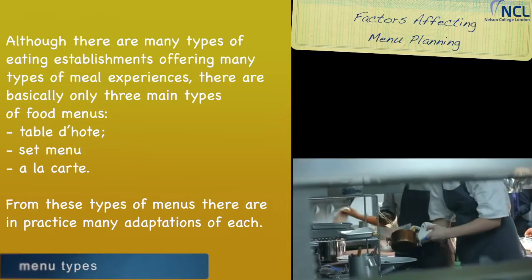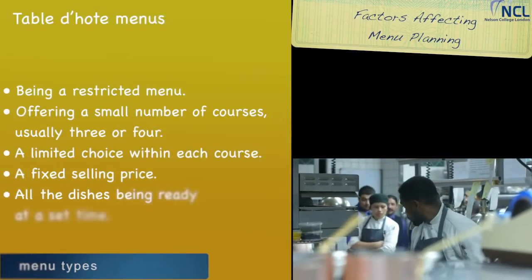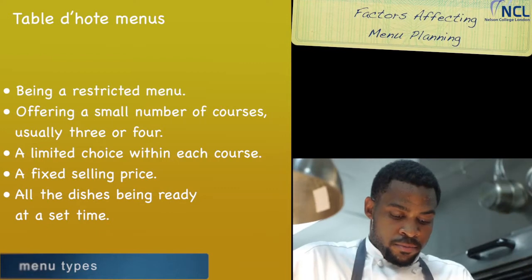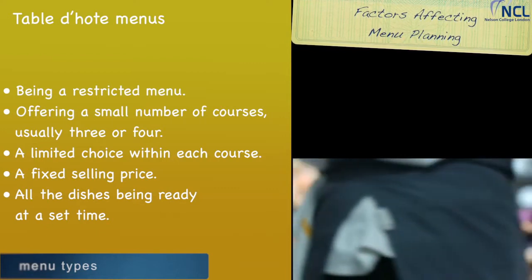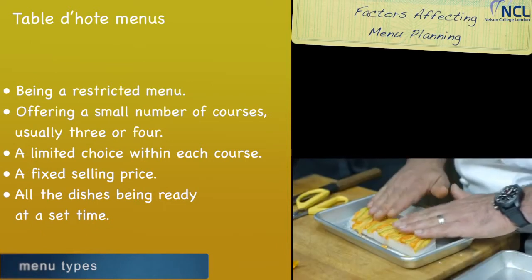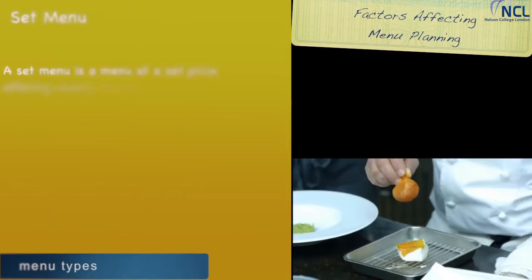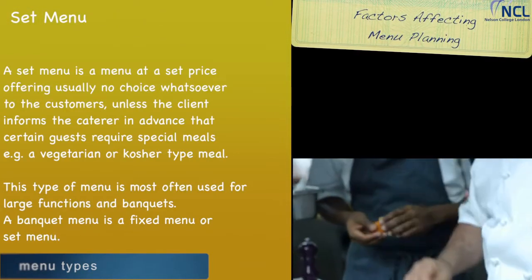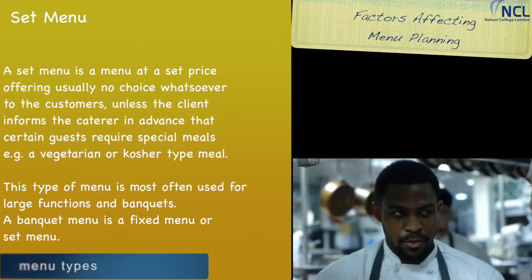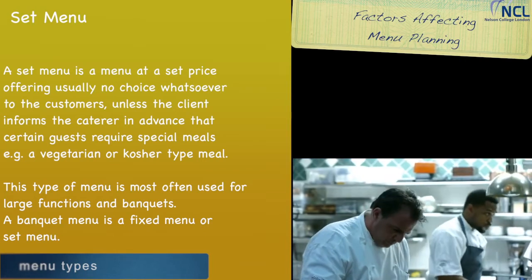From these types of menus there are in practice many adaptations of each. Table d'hôte menus are usually restricted — they offer a small number of courses, usually three or four, with a limited choice within each course and a fixed selling price. All the dishes are ready at a set time. A set menu is a menu at a set price offering usually no choice whatsoever to the customers, unless the client informs the caterer in advance that certain guests require special meals.